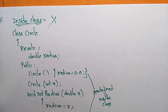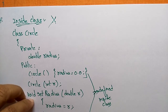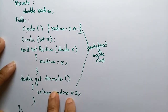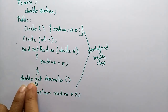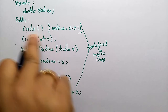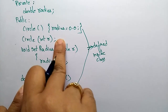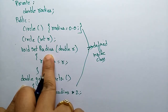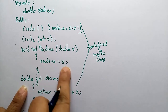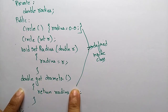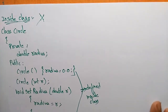The main concept is: member functions can be used inside the class definition or outside the class definition. Here, the member functions are declared inside the class definition — void setRadius(double r) with radius = r, and double getDiameter() returning radius * 2. These methods are already defined inside the class.